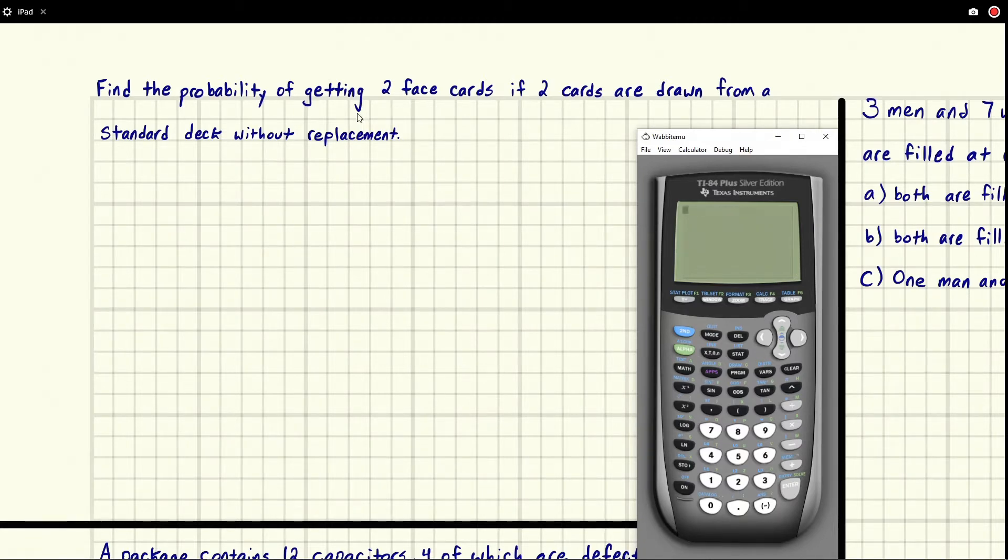Cards with faces on them. We've got kings, queens, and jacks, so that is 12 face cards because there are four kings, four queens, and four jacks.